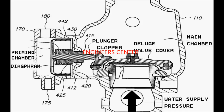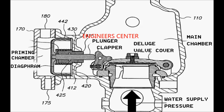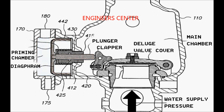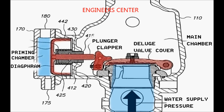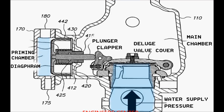The position of the deluge valve depends on the differential pressure between the priming chamber water pressure and the water supply pressure. In the shown figure, the deluge valve is in the normal closed position where the priming water pressure is pushing the diaphragm in the forward position, which is connected to the plunger, forcing the clapper to close the deluge valve cover and overcoming the water supply pressure.